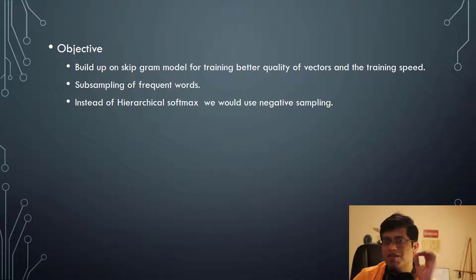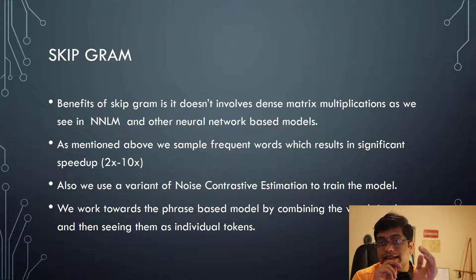So Skip-Gram model, what were the basic benefits that we actually score in Skip-Gram model? The benefits of Skip-Gram model was that we don't have to do the dense vector calculations that we saw in neural network models. Second is, as mentioned above, we saw that there can be a speedup of up to two to ten times just by removing the frequent words.